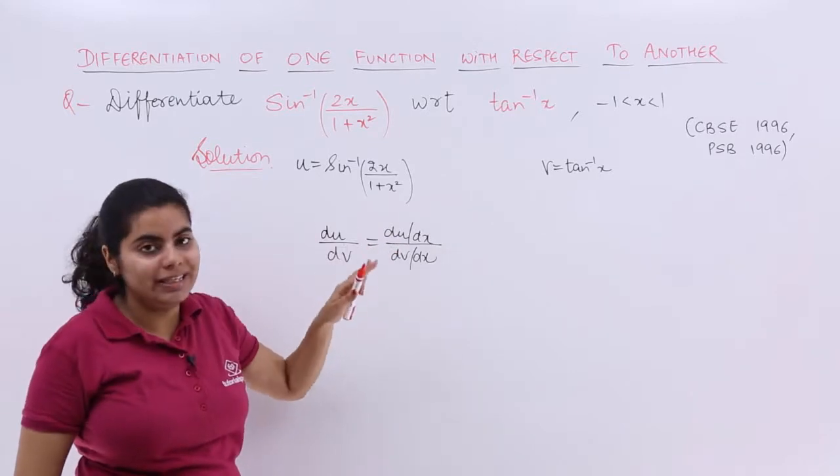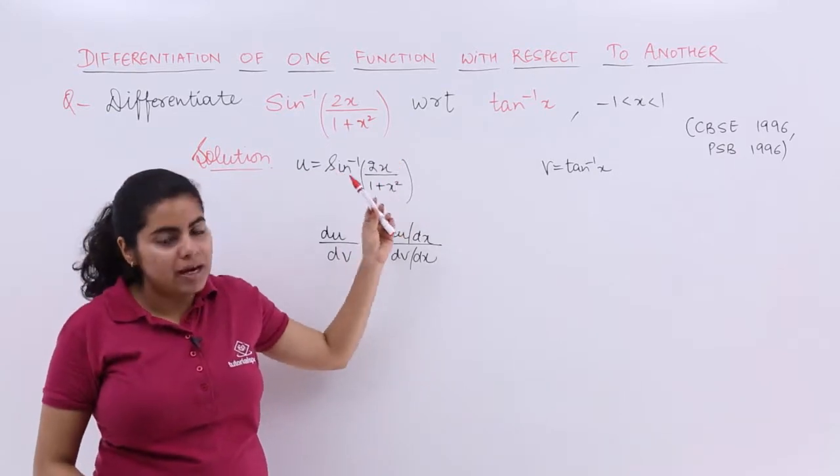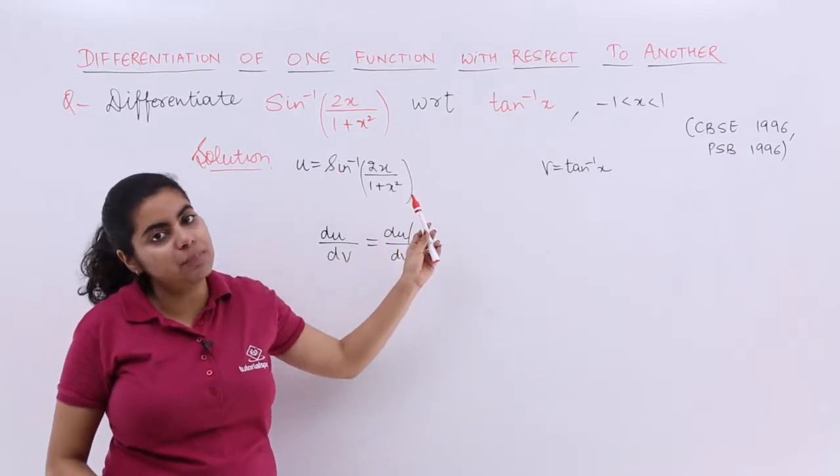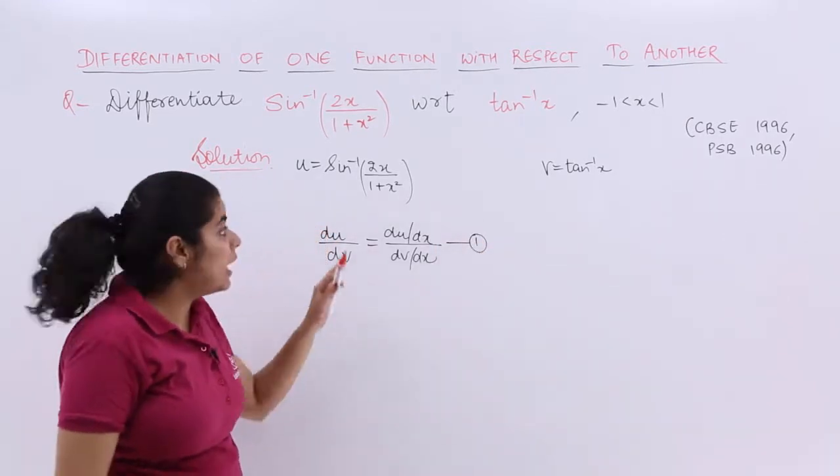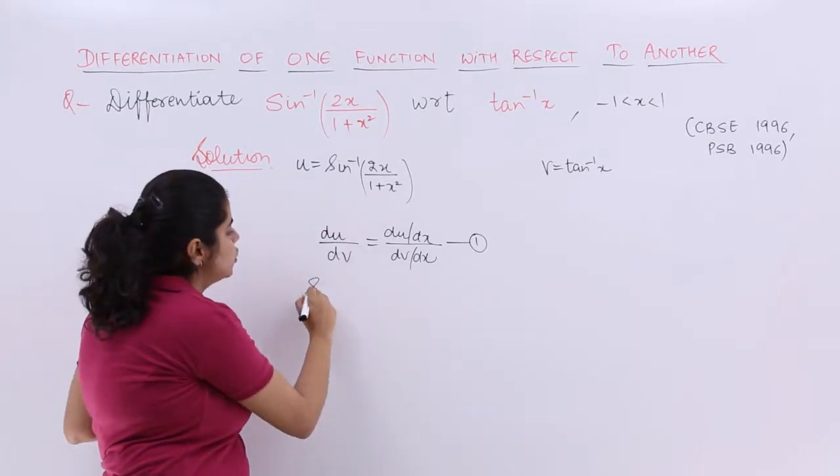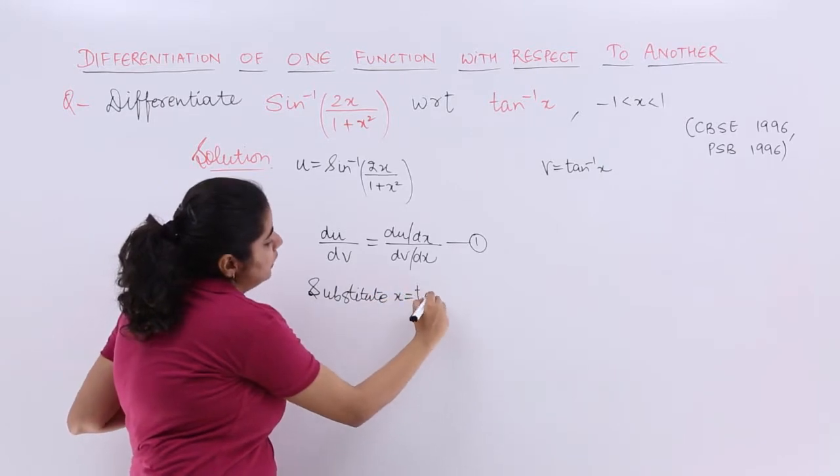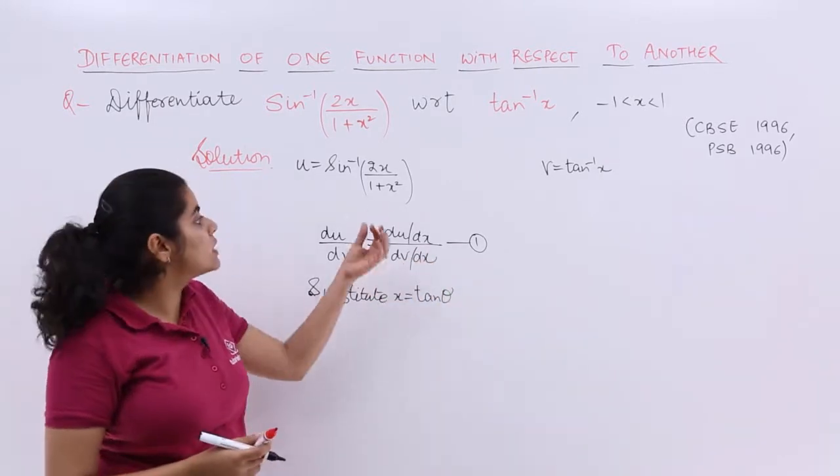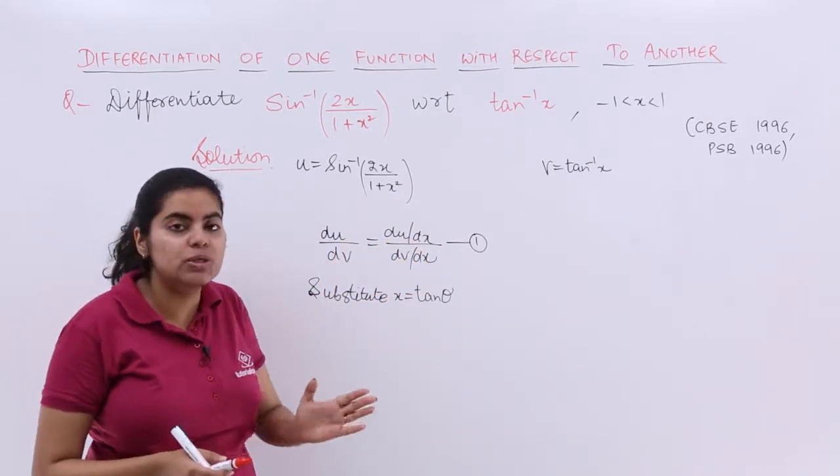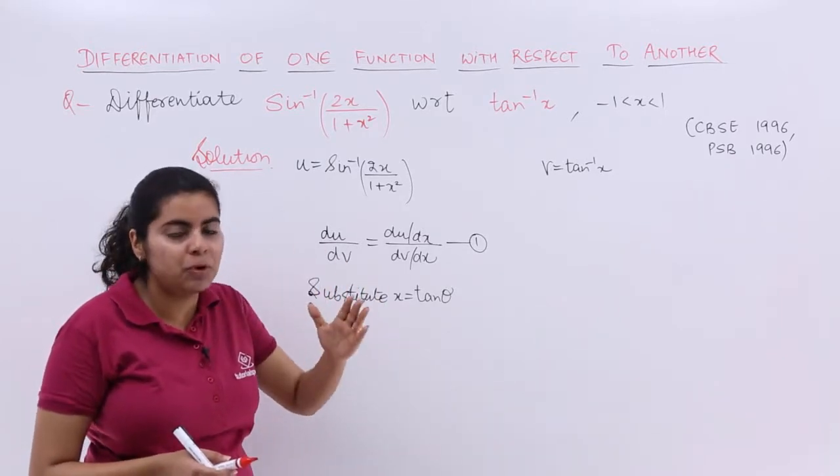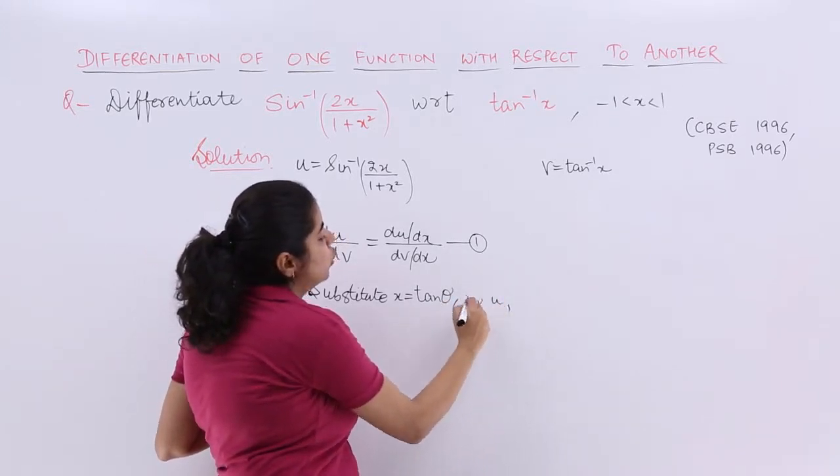Now what is du upon dx means the differentiation of u with respect to x. You see that it can be solved by differentiation using trigonometric substitution as we started in the previous video. So let's make this as equation number 1 and let's deal again with u. Now substitute x is equal to tan theta, why tan theta because I say that it is a square plus x square type.